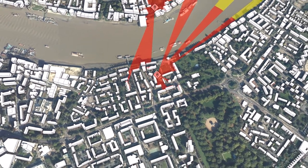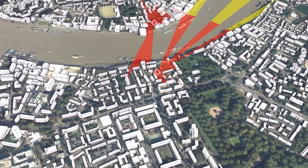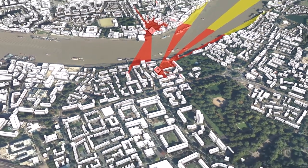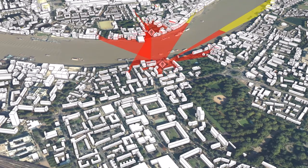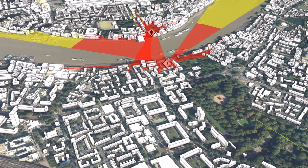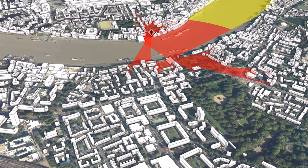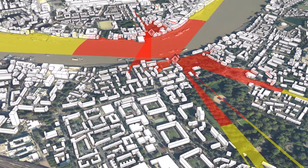Kermenta can also perform various kinds of analysis in a 3D map like this. We have now activated one such analysis: the 3D line of sight calculation.